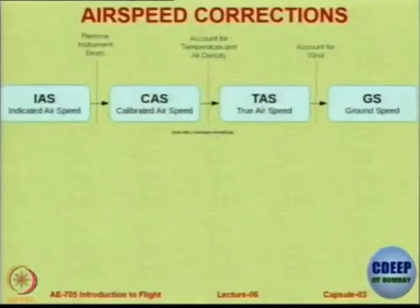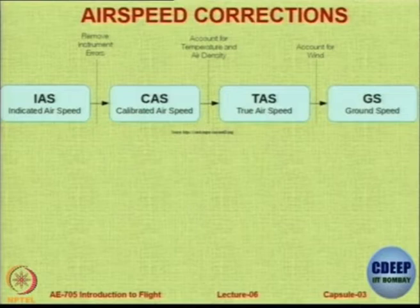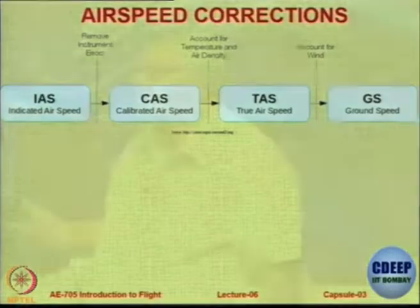Let us assume that we remove the instrument errors. The speed which the instrument then shows is called the Calibrated Airspeed. That means a perfectly working airspeed indicator should show this particular speed when so much dynamic pressure is acting on the system. The instrumentation works only on the difference between total pressure and static pressure — that difference is what moves it. So the calibrated airspeed is the speed that an error-free instrument should show.